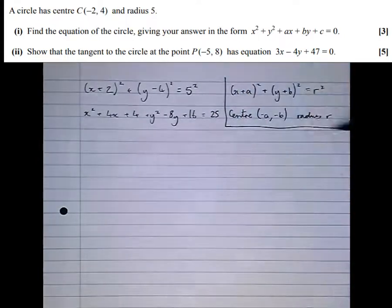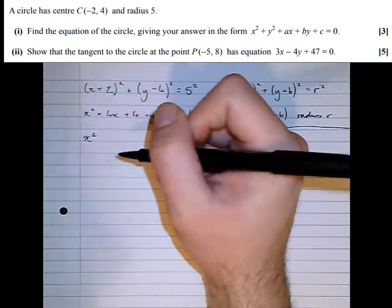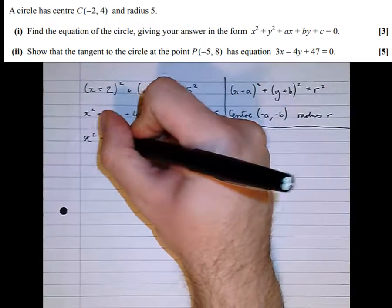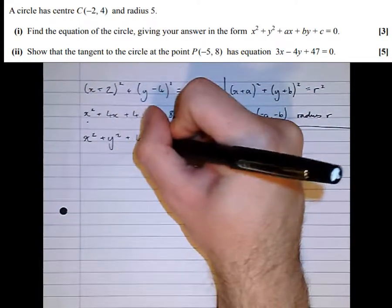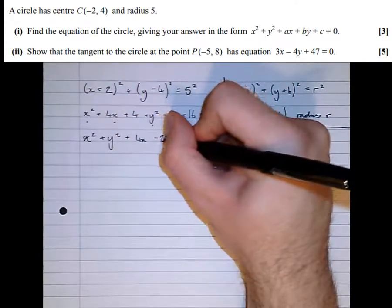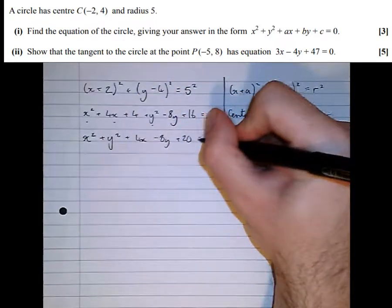Let's gather all the terms together and put them in the order required: x² + y² + 4x - 8y + 20 = 25.